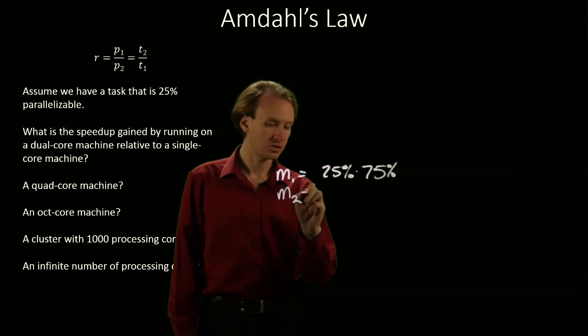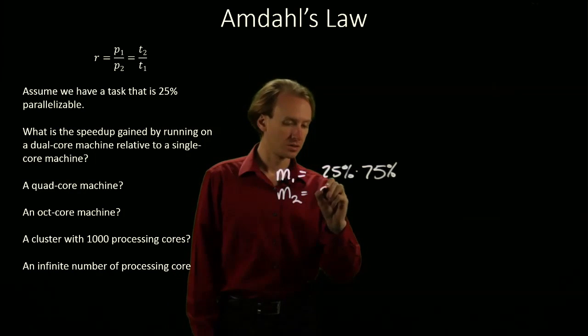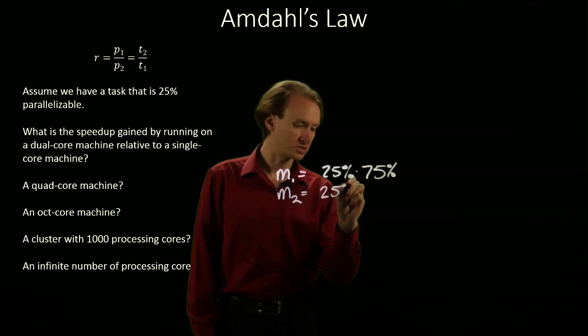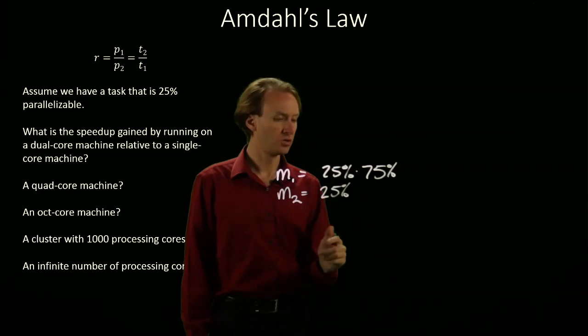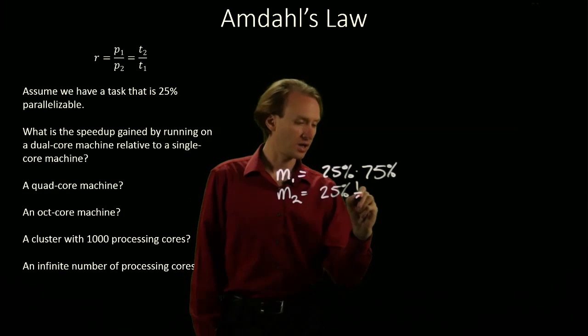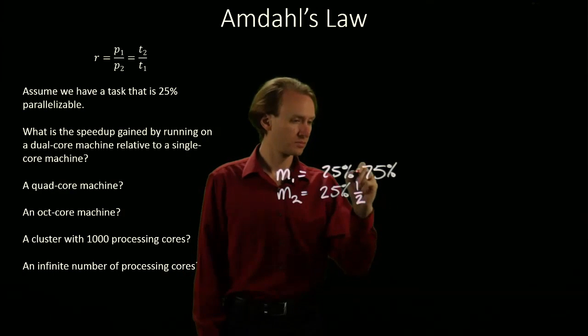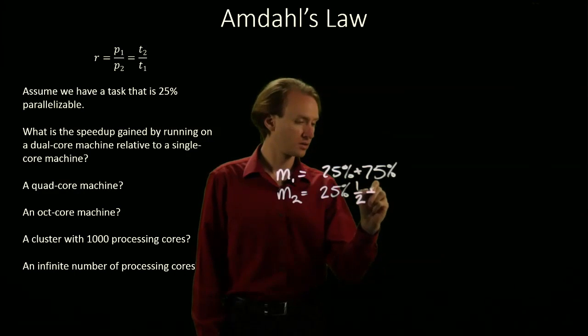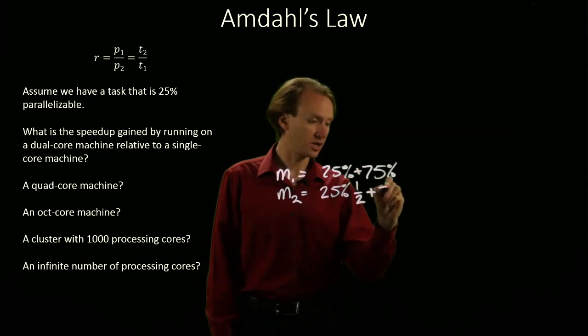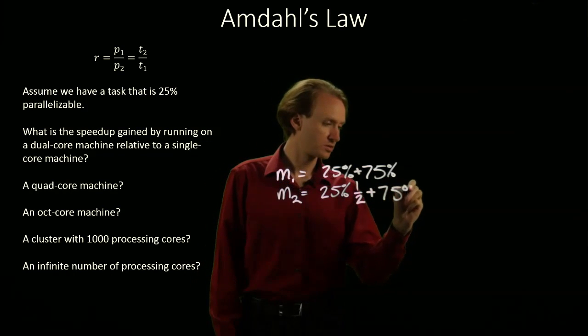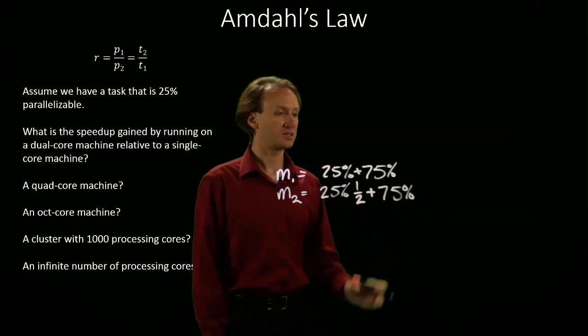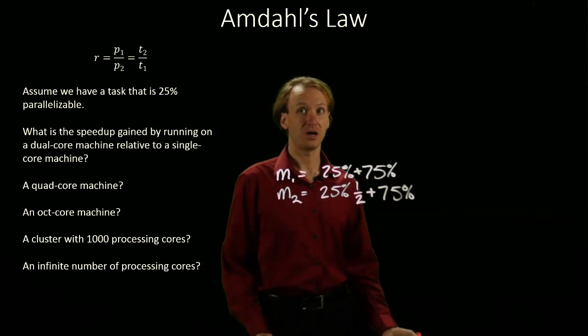Machine 2 takes that same 25% of the code that's parallelizable and can now run that in half as much time. But it still has to spend the same amount of time to run that 75% that's non-parallelizable.